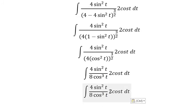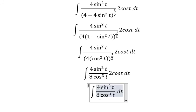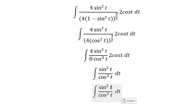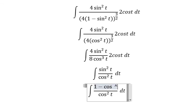Now we simplify 2 cosine t with the denominator, and the 4s cancel out. We can change sine squared t to 1 minus cosine squared t.